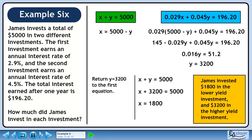To answer the question, James invested $1800 in the lower yield investment and $3200 in the higher yield investment.